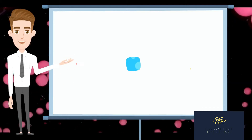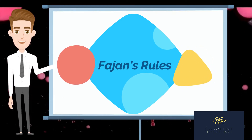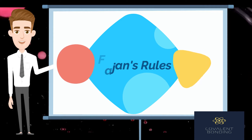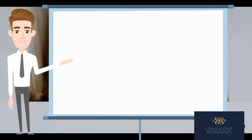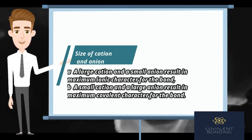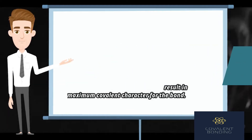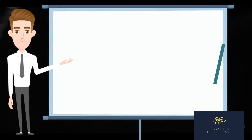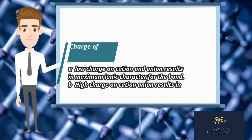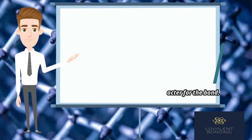The relative proportion of ionic and covalent characters of an ionic compound depends upon the polarizing power and polarizability of the respective cation and anion, explained on the basis of Fajan's rules. 1. Size of cation and anion: a large cation and a small anion result in maximum ionic character; a small cation and a large anion result in maximum covalent character. 2. Charge of cation and anion: low charge results in maximum ionic character, while high charge results in greater proportion of covalent character.